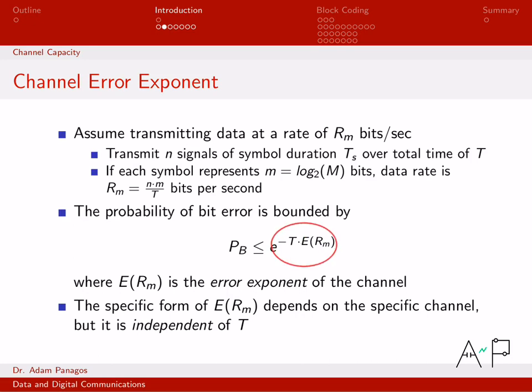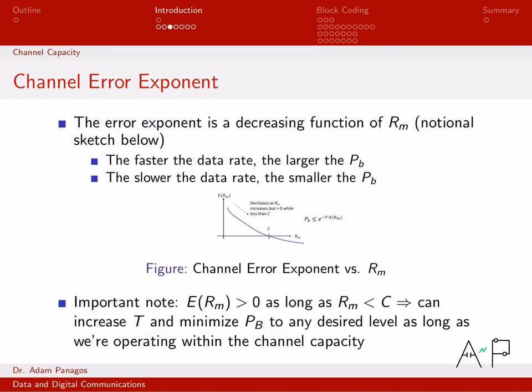So let's think about that. The important thing there is that the channel error exponent is positive. This cartoon right here shows a notional sketch of how the channel error exponent behaves as a function of rate. Here is rate Rm. Here is a plot of the channel error exponent. And the blue curve shows that as the rate that you're transmitting at increases, the error exponent decreases.